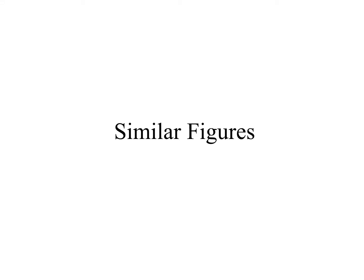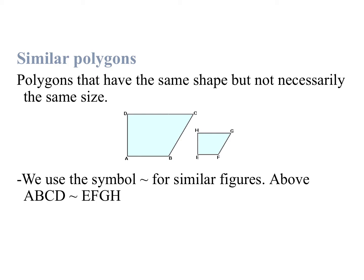In this video you will learn about similar figures. Similar polygons are polygons that have the same shape but not necessarily the same size. As we can see here, the quadrilateral on the left is much larger than the quadrilateral on the right, however their angles are the same size. And we use this squiggly symbol to show that they are similar.